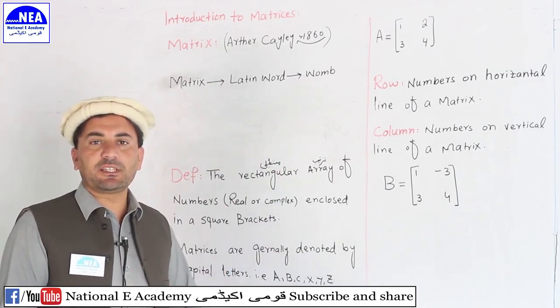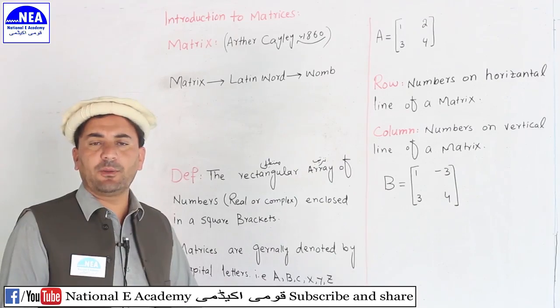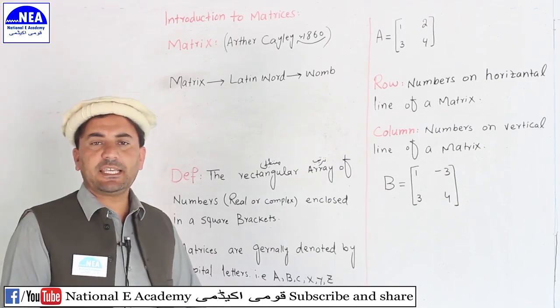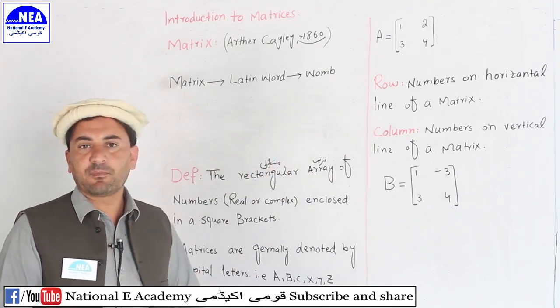Just as with us, male and female DNA combine, and a child forms in the womb — that is the analogy for matrix.